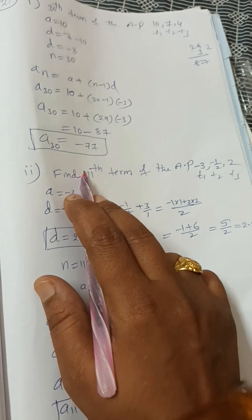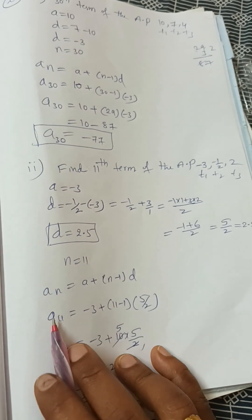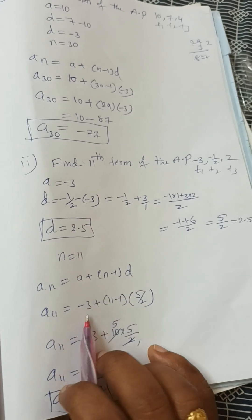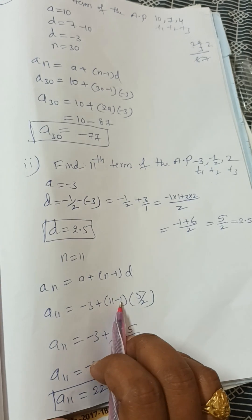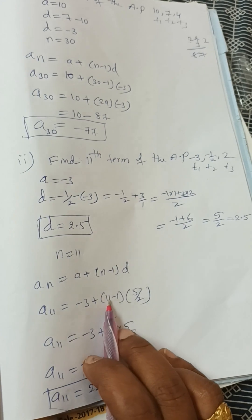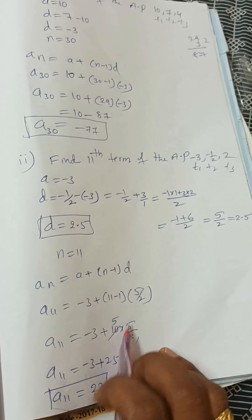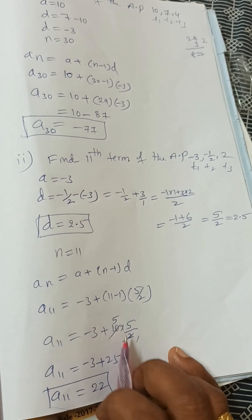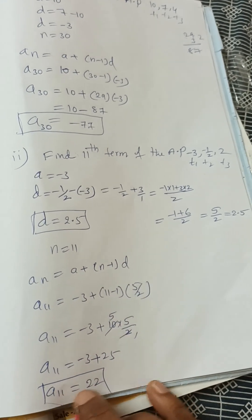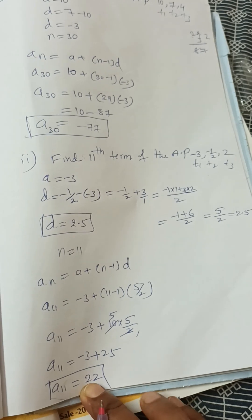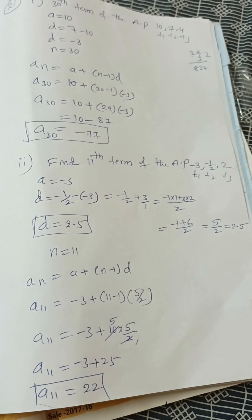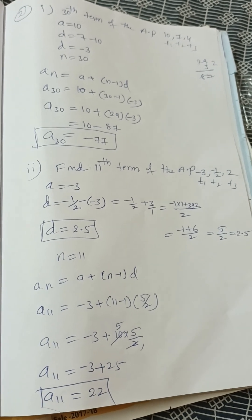Now n = 11. Using aₙ = a + (n − 1) × d: a₁₁ = −3 + (11 − 1) × (5/2) = −3 + 10 × (5/2) = −3 + 25 = 22. So a₁₁ = 22.